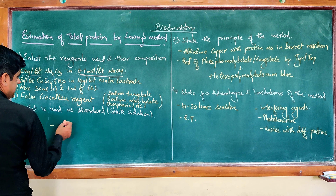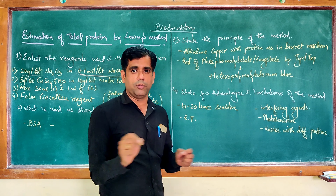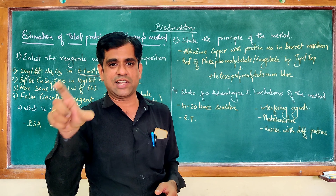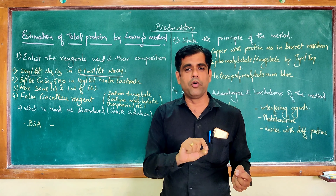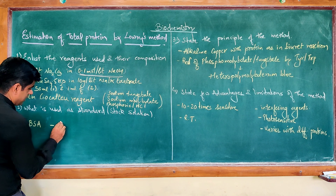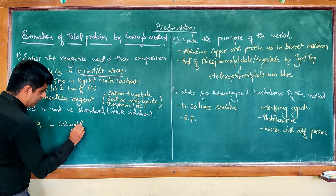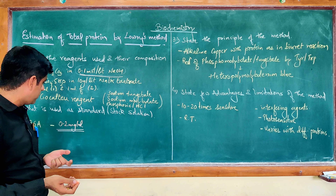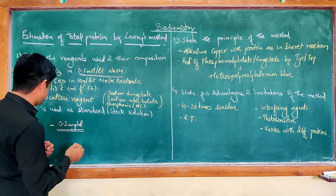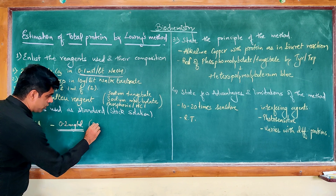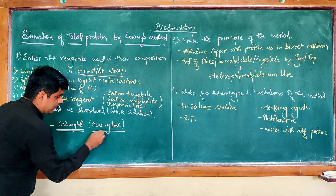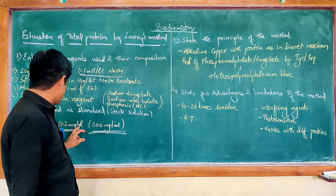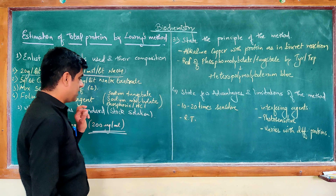The next question asks what is used as the standard stock solution. The most commonly used standard for protein estimation is BSA — bovine serum albumin, sometimes labeled as albumin fraction 5. You prepare it at a concentration of 0.2 milligrams per ml. So if you are preparing 100 ml of your stock solution, you will add 0.02 grams of BSA. This is your standard stock solution.